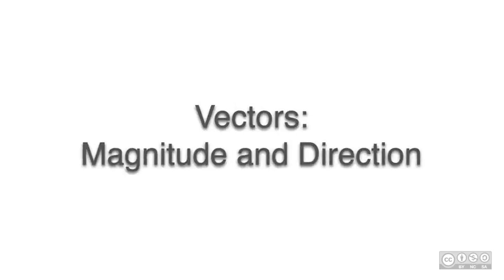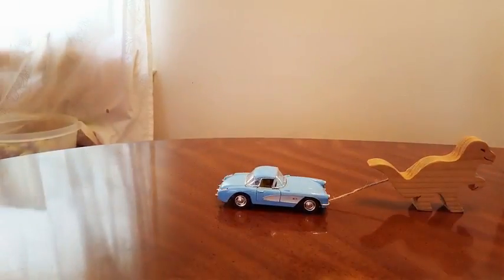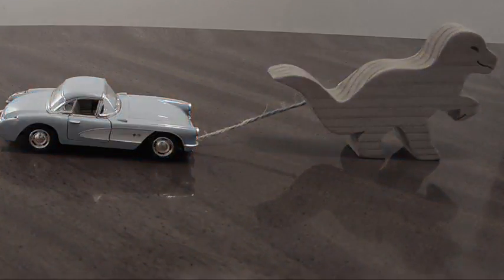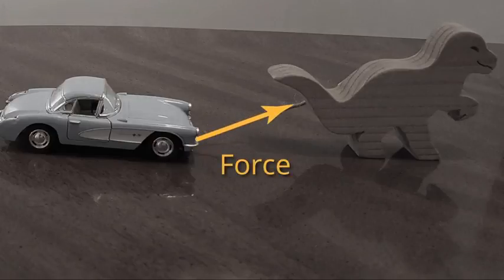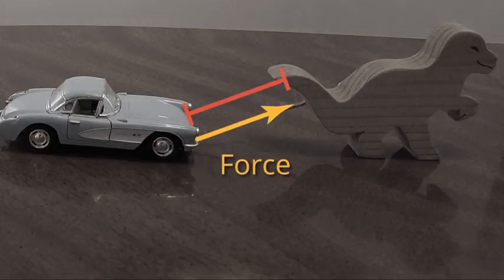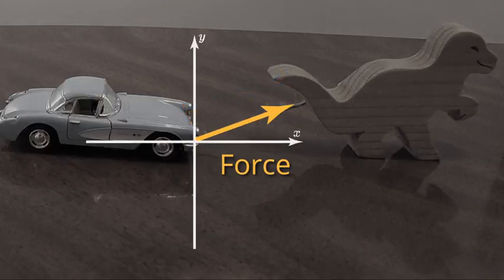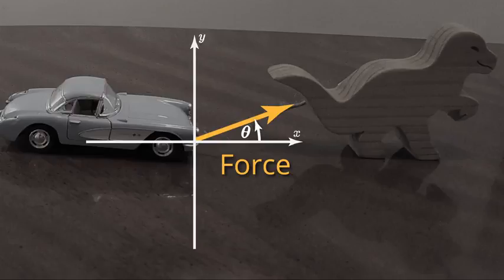We now look at representing vectors by their magnitude and direction. In this example, we have a force here. We can represent this force by its magnitude, which is the length of the vector, and the angle from the x-axis going towards the y-axis.